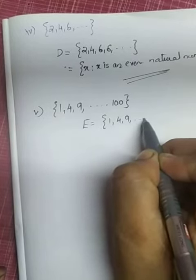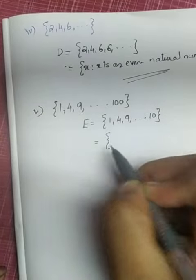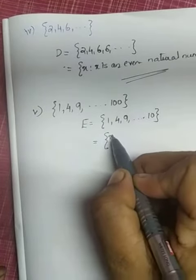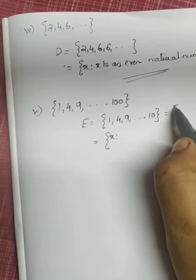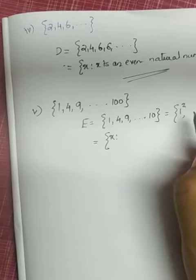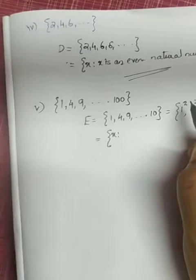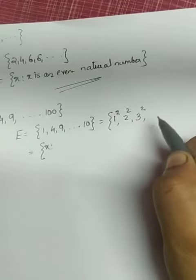How will we start? Set of all x such that - what's the specialty of these numbers? Can you identify? 1 is 1 squared, 4 is 2 squared, 9 is 3 squared. Obviously...